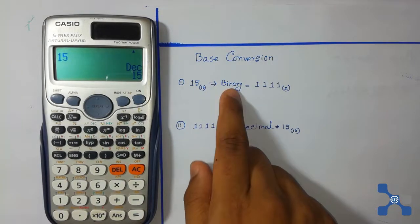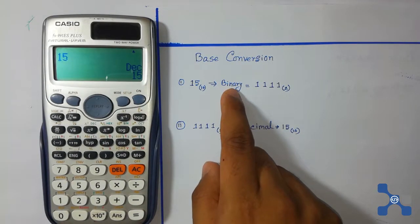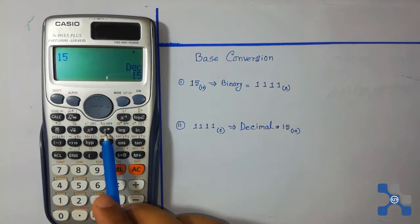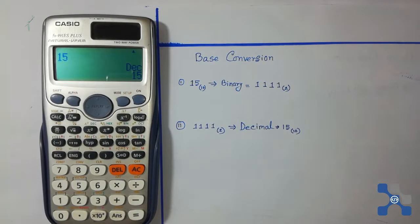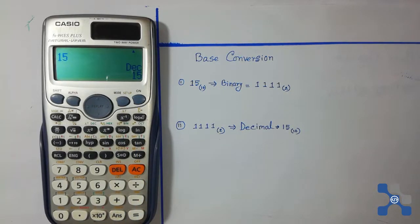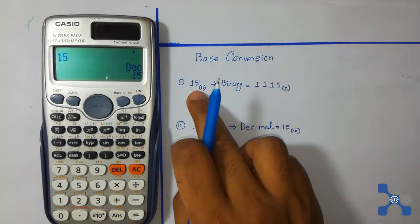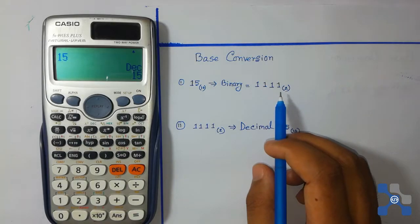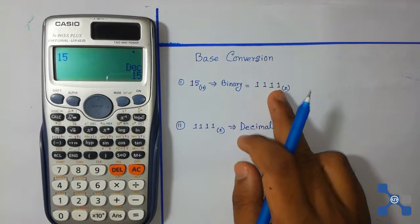If you want to convert 15 into binary, you need to press this button. If you want to convert 15 into hexadecimal, you need to press this button. If you want to convert 15 into octal, you need to press this button. Now I am going to convert decimal 15 into binary.